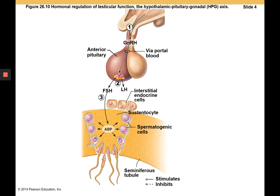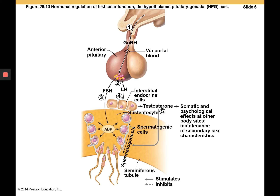Follicle-stimulating hormone acts on sustentocytes, causing them to release androgen-binding protein (ABP). ABP sequesters testosterone near the seminiferous tubules, promoting spermatogenesis. Testosterone is produced by the interstitial endocrine cells, or Leydig cells, stimulated by luteinizing hormone. Testosterone is able to promote spermatogenesis as well, being sequestered around the spermatogonia by ABP.